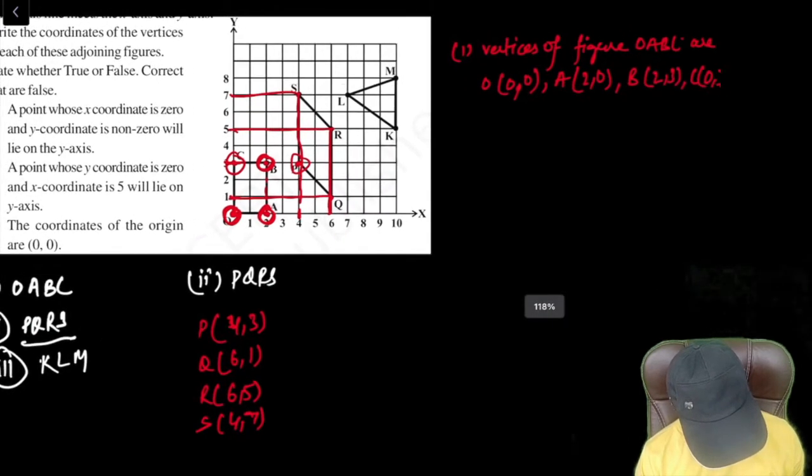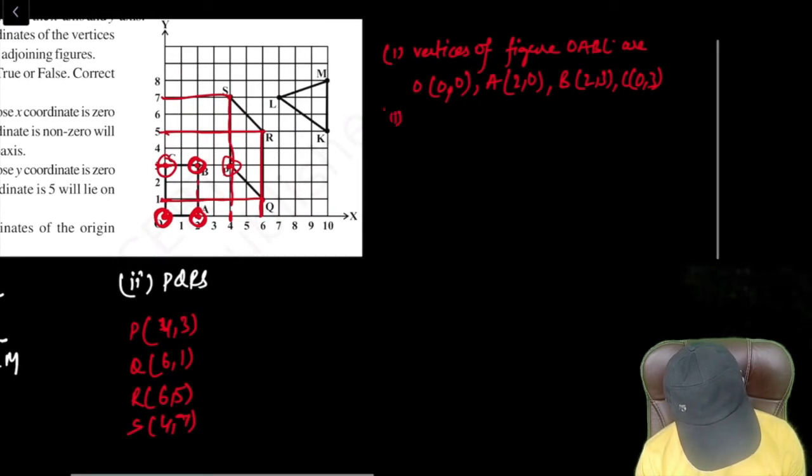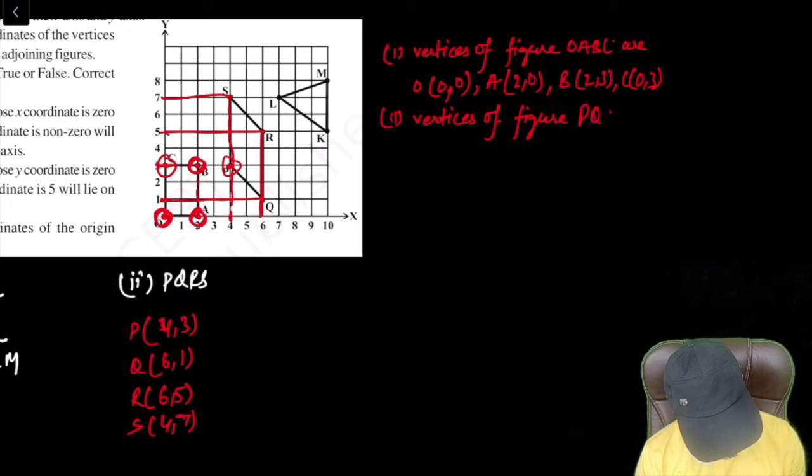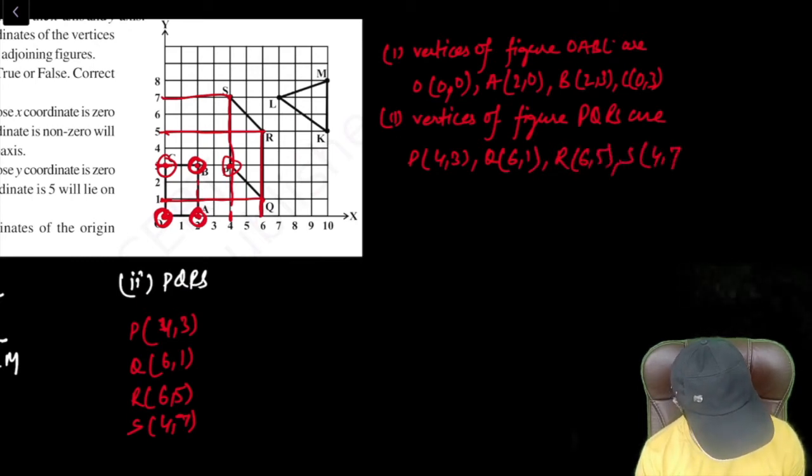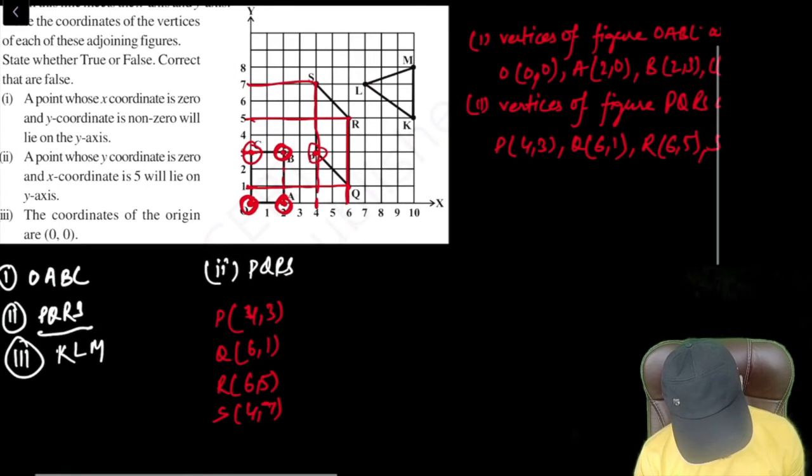Now we can also write this point as this one. We can write it into the answer. Vertices of figure PQRS are P (4,3), Q (6,1), R (6,5), S (4,7). So this is the second one.